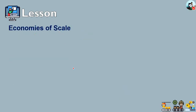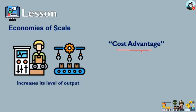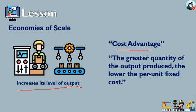What is economies of scale? It refers to the cost advantage experienced by any firm or business when it increases its level of outputs. An advantage arises due to the inverse relationship between the per unit fixed cost and the quantity produced. The greater the quantity of output produced, the lower the per unit fixed cost — this is called economies of scale.